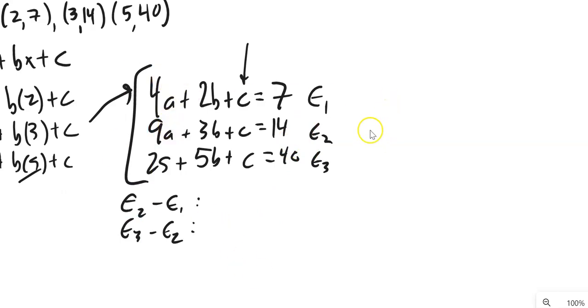Equation 2 minus equation 1. So, 9a minus 4a is 5a. 3b minus b is 1b. c minus c goes away, which is what I wanted to happen. Then I have 14 minus 7 is 7.